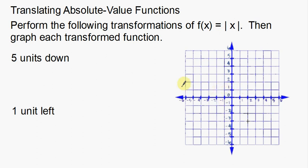We start at (0, 0) for this function. It's actually going to look very similar to a linear function. When I plug in x = 1, the absolute value of 1 is 1, so I get out 1. I plug in 2, I get out 2. I plug in 3, I get out 3. So on the positive side, this is what your absolute value looks like.